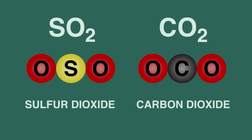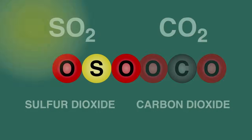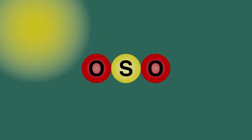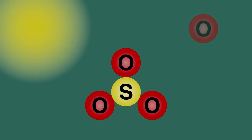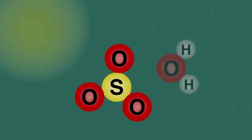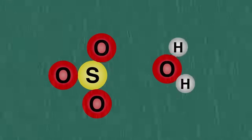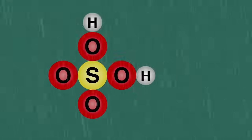In the presence of sunlight, a photochemical reaction will take place where sulfur dioxide reacts with more oxygen to form sulfur trioxide. This dissolves in the rainwater, forming sulfuric acid.